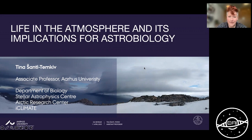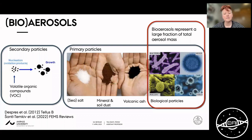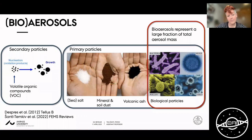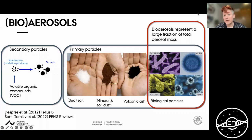On Earth, there are different atmospheric particles that are significant in terms of our climate and cloud formation. These particles can either form in the atmosphere as secondary particles from volatile compounds that nucleate and grow, or they are emitted as primary particles already from the surface. Some of the most abundant particles are sea salt, mineral and soil dust, volcanic ash, but also a large fraction are biological particles — including microorganisms, fragments of organisms, dispersal units, or molecules produced by different organisms.